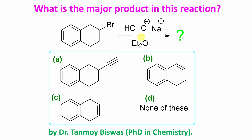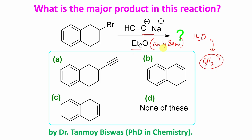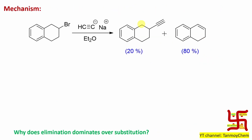Let's start. The question is: what is the major product of this reaction? This bromide reacts with monosodium acetylide in ether. Since we are using monosodium acetylide, this ether must be anhydrous ether — because if water is present in the medium, it will react with the monosodium acetylide, which is a carbanion, and produce acetylene (C₂H₂). That wastes the reagent, which is why anhydrous conditions are used.